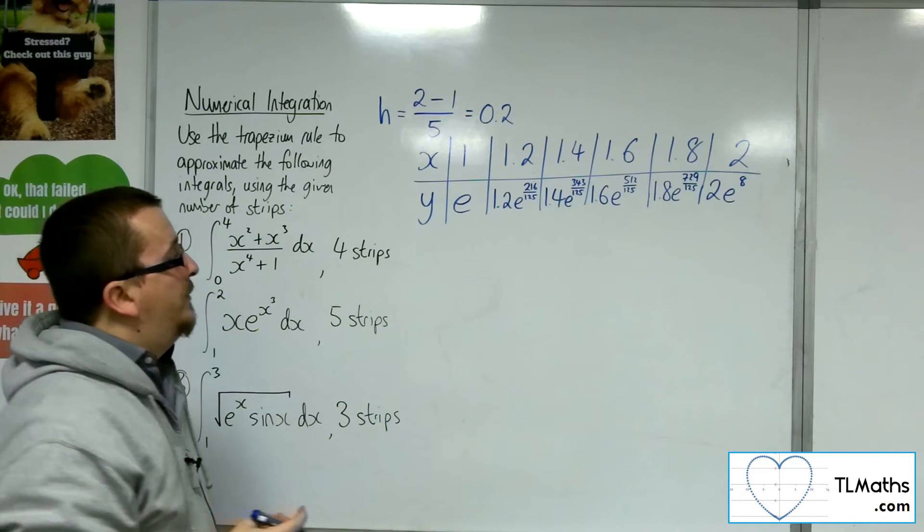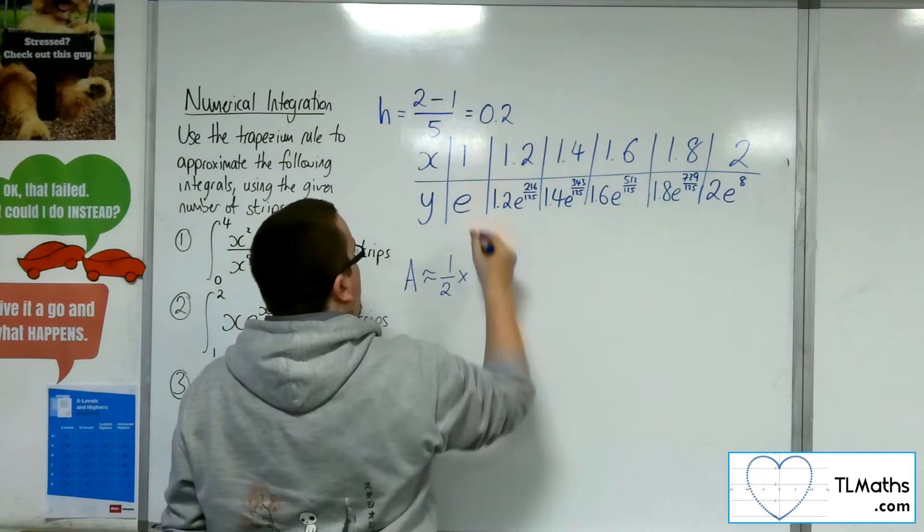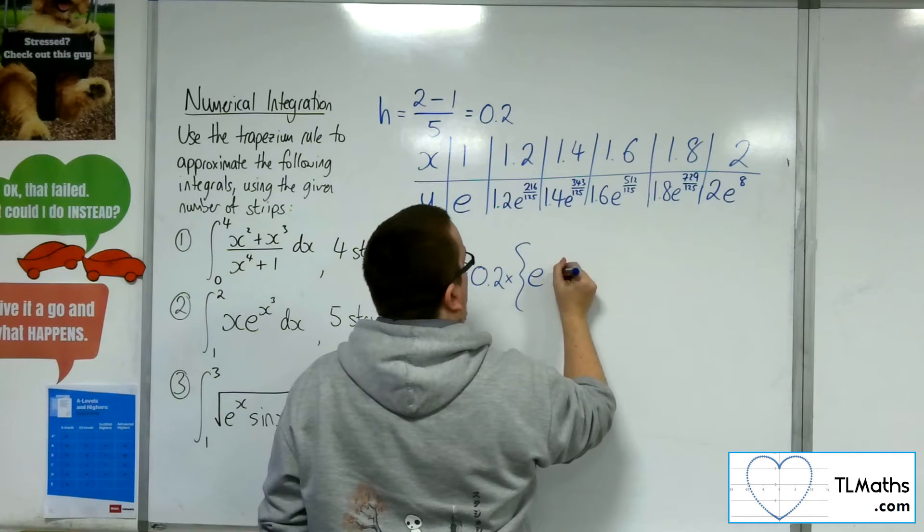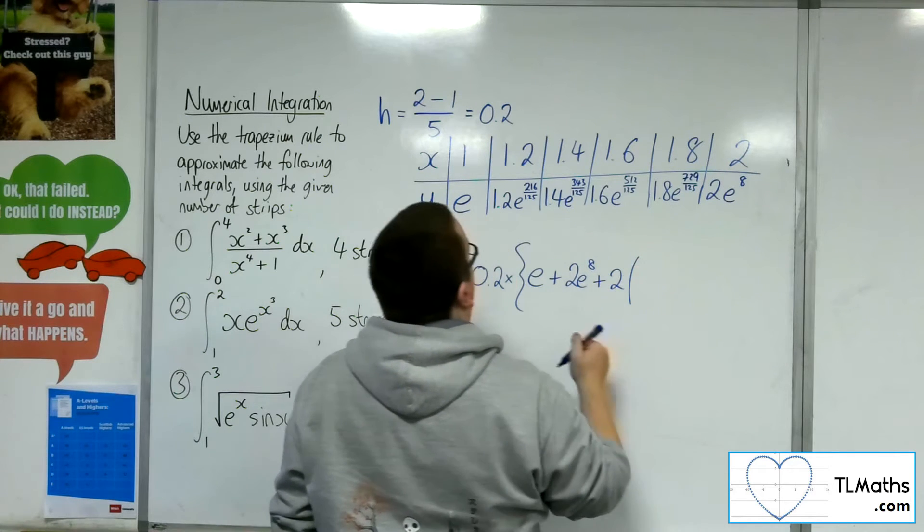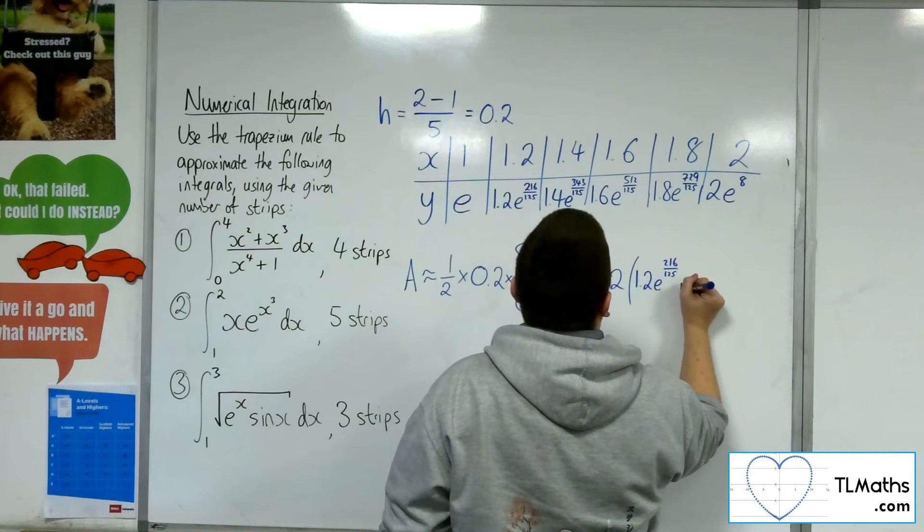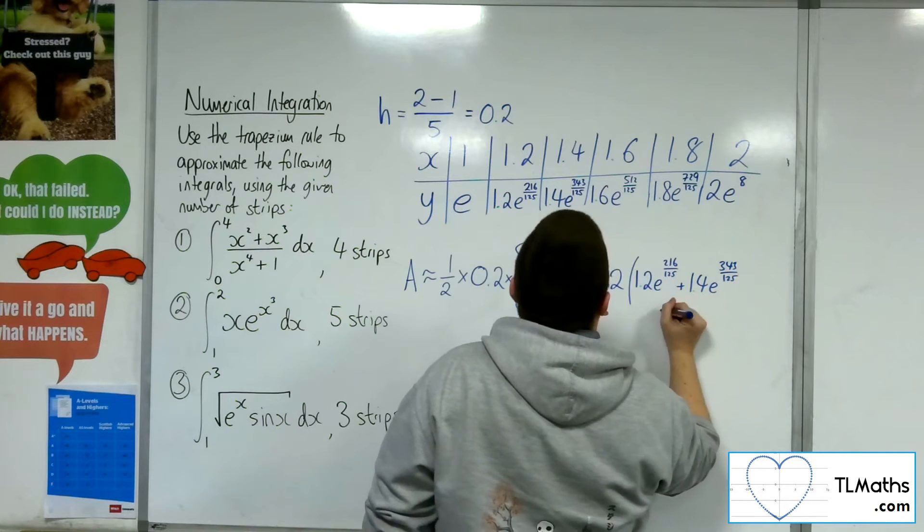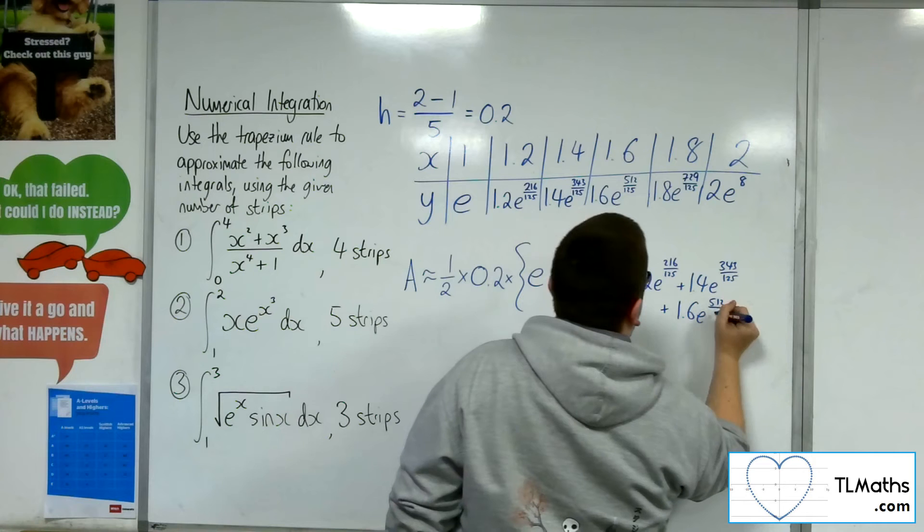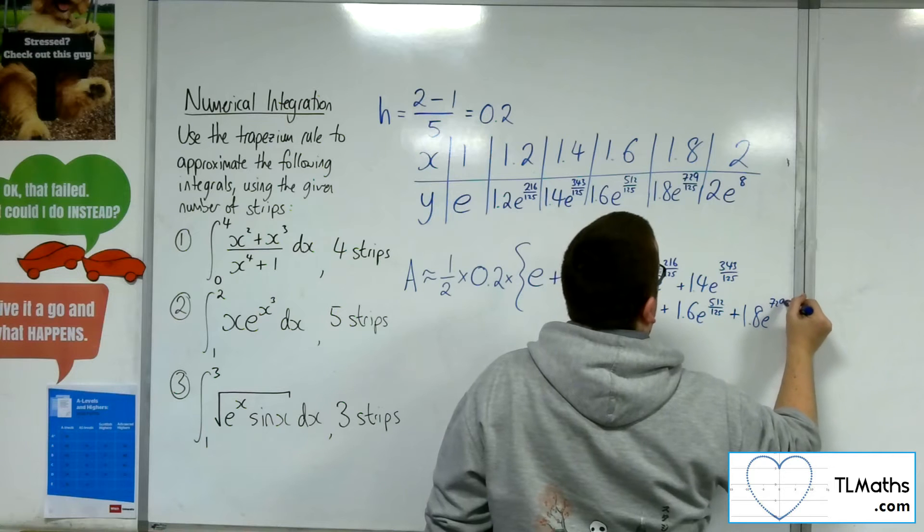So the area will be approximately 1.5 times h times by the first plus the last plus 2 lots of the rest. So 1.2 e to the 216 over 125. 1.4 e to the 343 over 125. 1.6 e to the 512 over 125. Plus 1.8 e to the 729 over 125.